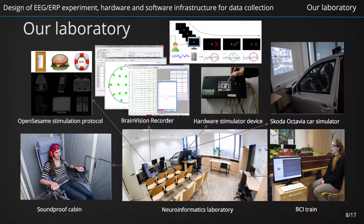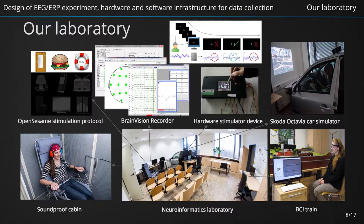Now we have a look at how general principles of experimental design can translate into the specific infrastructure of a neuroinformatics laboratory. Our neuroinformatics laboratory is located at the University of West Bohemia, Czech Republic. It was designed to allow us to perform both laboratory and real-world experiments. For laboratory experiments, it is practical to get as noise-free and calm an environment as possible. To ensure that measurements take place in a quiet place and that the EEG signal is protected from electrical noise, there is a soundproof electrically shielded cabin. The Škoda Octavia car simulator with a hardware stimulator device for cognitive research is an example of this kind of experiment. It has been used to investigate how drivers behave during long monotonous driving and to study drowsiness by means of ERPs.